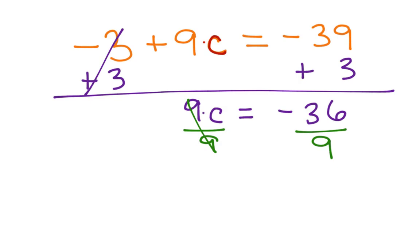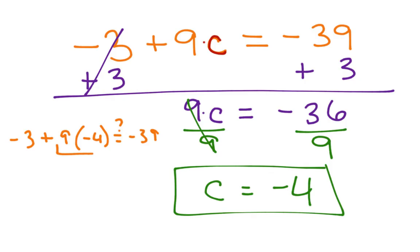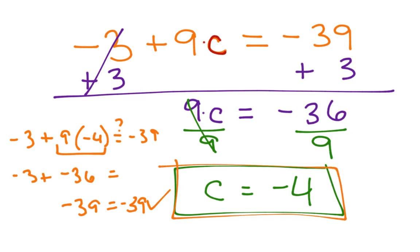Here we have 9C. We divide by 9 on both sides, and we end up with C equals negative 4. To check if that's our correct solution, we'll plug it back into the equation: negative 3 plus 9 times negative 4. Does that equal negative 39? Order of operations says multiply first — that gives negative 36. Negative 3 plus negative 36 equals negative 39, which is what the equation said, so we have a correct answer.